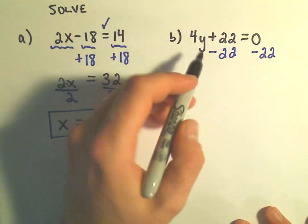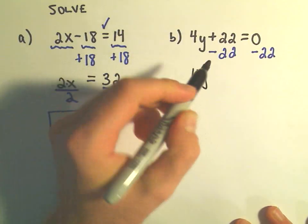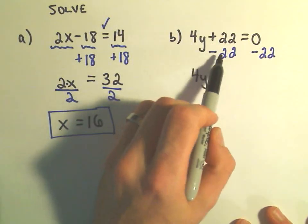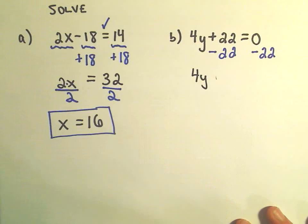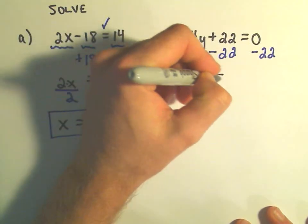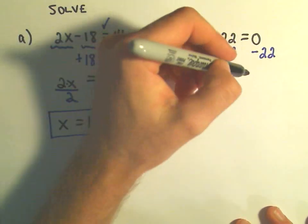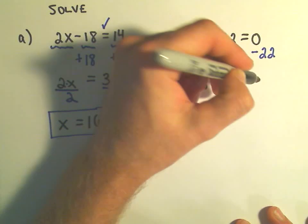On the left side, our 4y would just drop down. Positive 22 minus 22 would just leave us with plus 0. We don't really write that. And then 0 minus 22 would be negative 22.